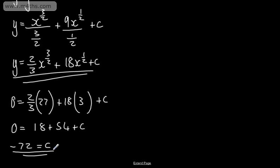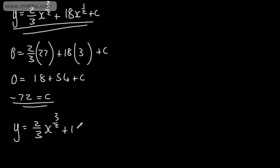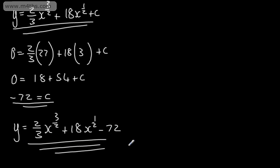So we can now write that y equals 2 over 3 x to the 3 over 2, plus 18x to the 1 half, or root x, minus 72. So that's our 6 marks.